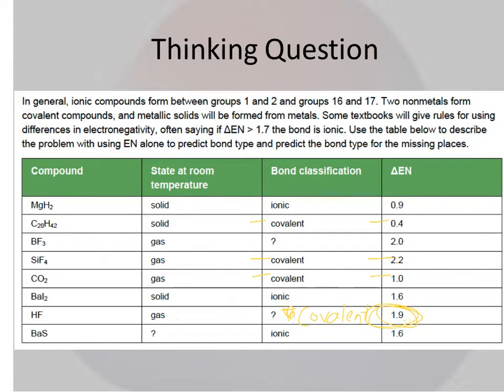And then this one right here, BaS, it's ionic. Ionics are always solid. I can tell you that. That's just always every day, all day long. And then this gas up here also has a pretty high change. So that is going to also be a covalent for us.